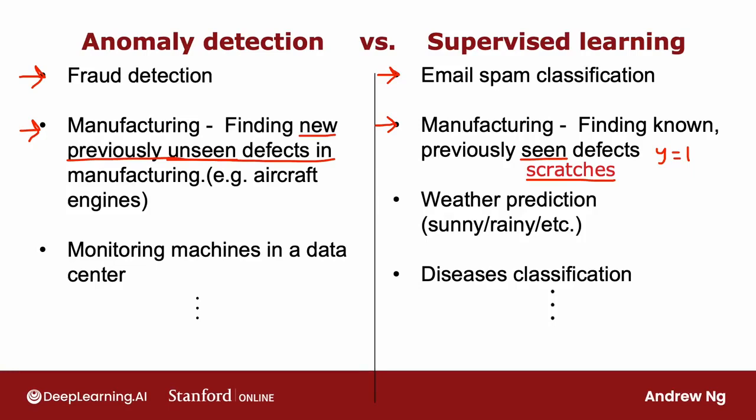Some other examples: monitoring machines in the data center, especially if a machine has been hacked — it can behave differently in a brand new way, unlike any previous way it has behaved. So that would be more like an anomaly detection application. In fact, one theme is that many security-related applications, because hackers are often finding brand new ways to hack into systems, will use anomaly detection.